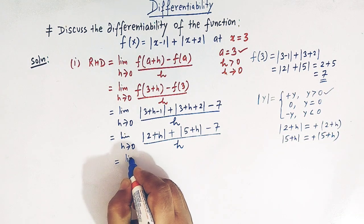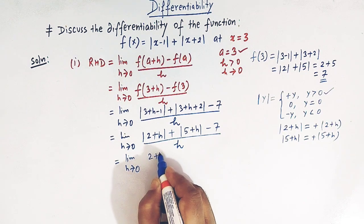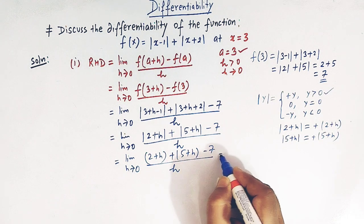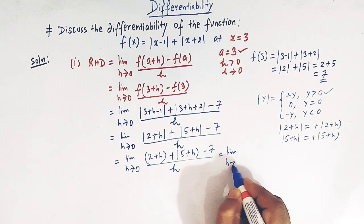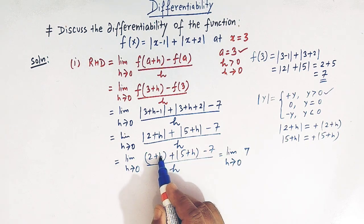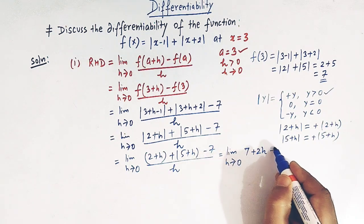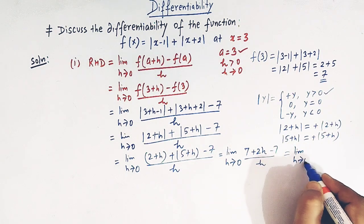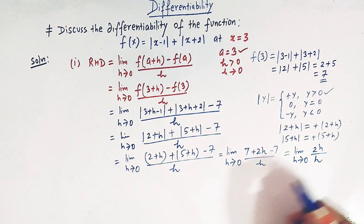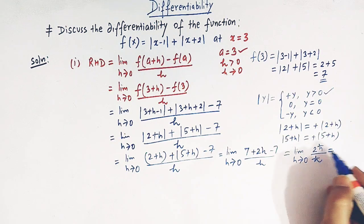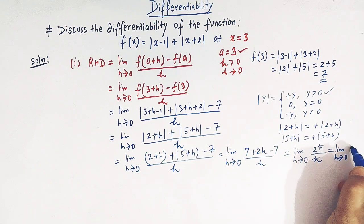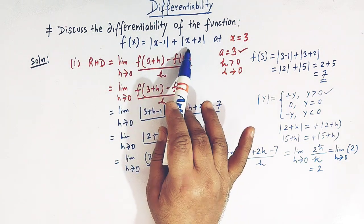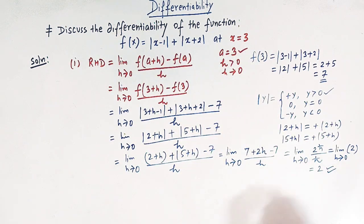So we have: limit h tends to 0 of [(2 + h) + (5 + h) - 7] / h = limit h tends to 0 of [7 + 2h - 7] / h = limit h tends to 0 of 2h / h. The h's cancel, leaving limit h tends to 0 of 2, which equals 2. So the right hand derivative at x = 3 is 2.